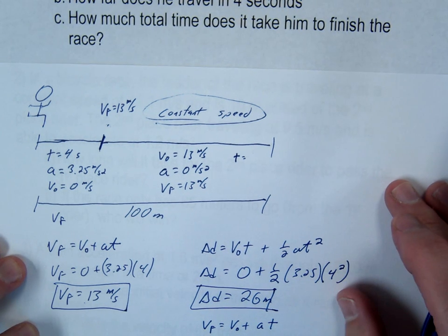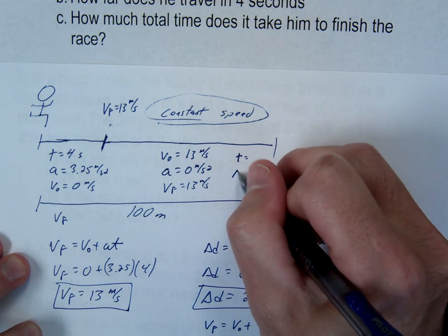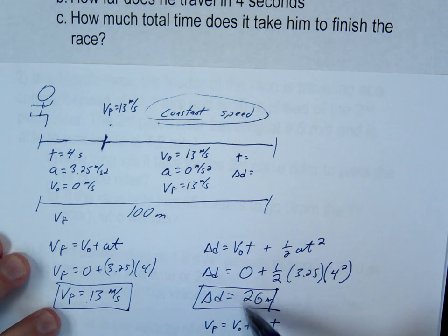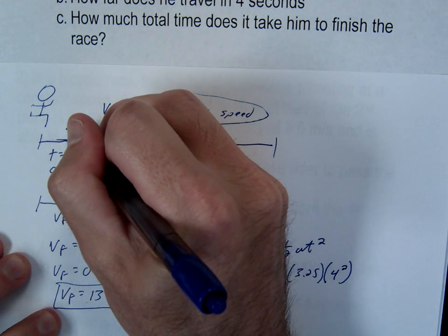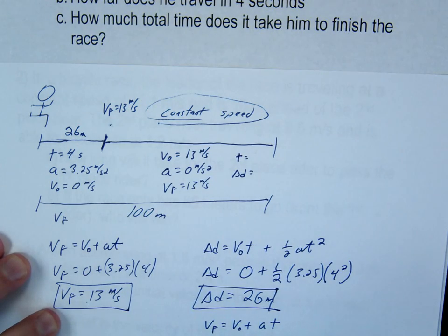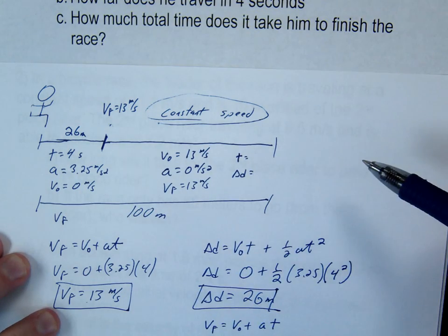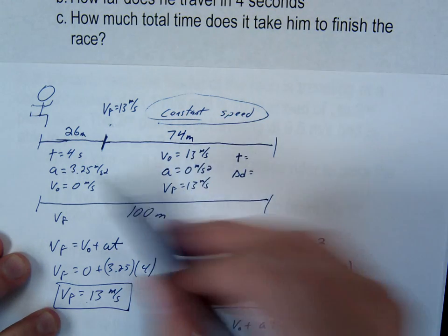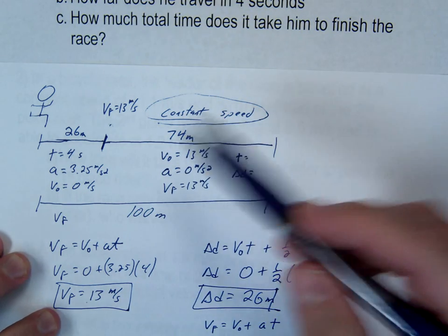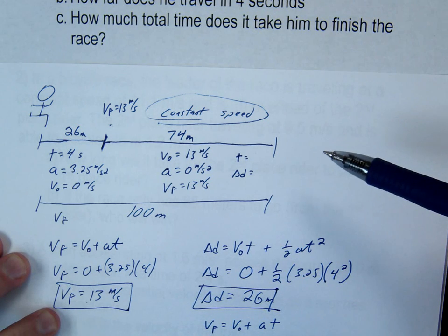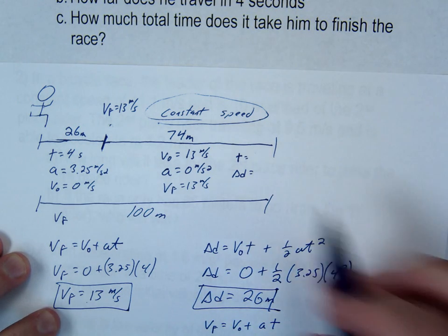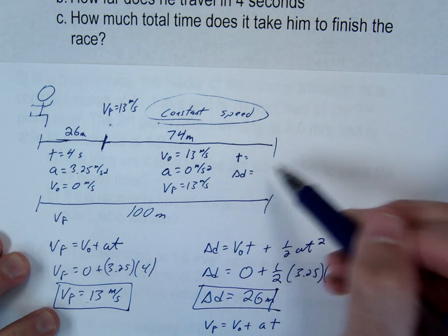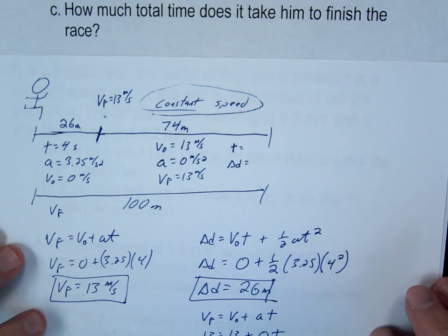What do we do? We find delta d. The other unknown is delta d here. Look at your picture. We found this was 26, the distance from here to here. If we know the whole race is 100m, then this second part is 74. This second part, three-fourths, is 74. Now we have four things. We can find the fifth.